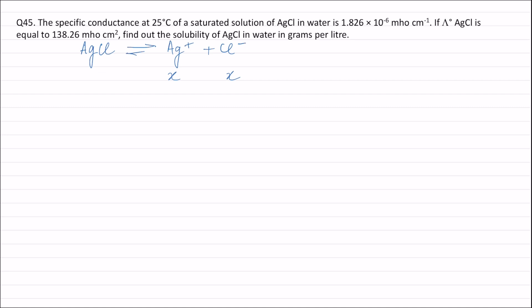The charge on silver ion is 1 and the charge on chloride ion is also 1, therefore the number of moles of silver ions or chloride ions is the same as the number of equivalents. Therefore x equivalents of silver ions or chloride ions are present in 1000 mL of solution, meaning one equivalent is present in 1000/x mL of solution.